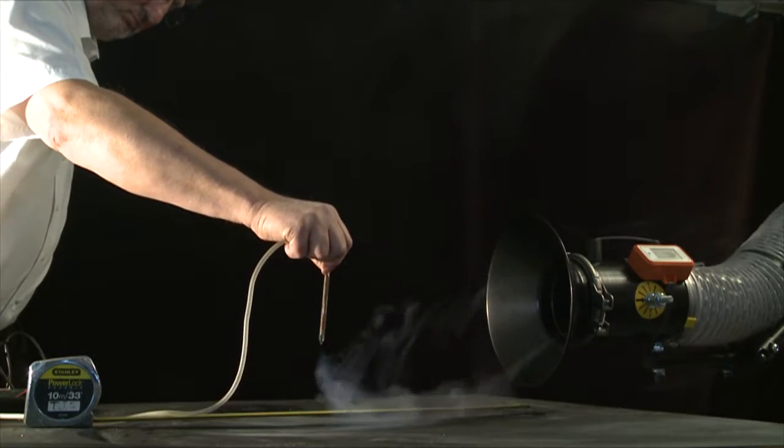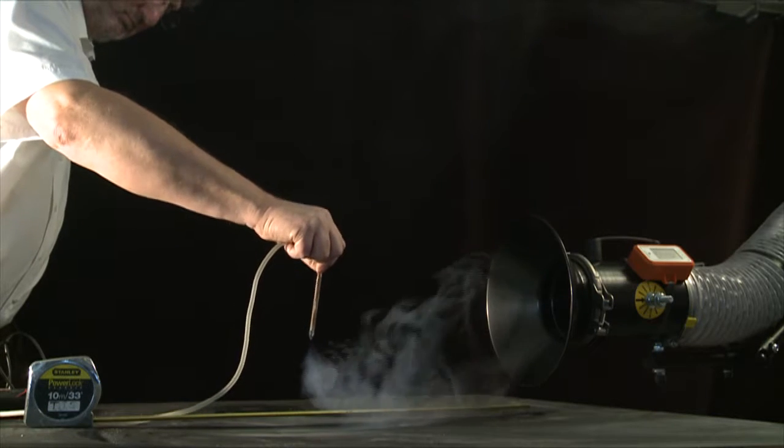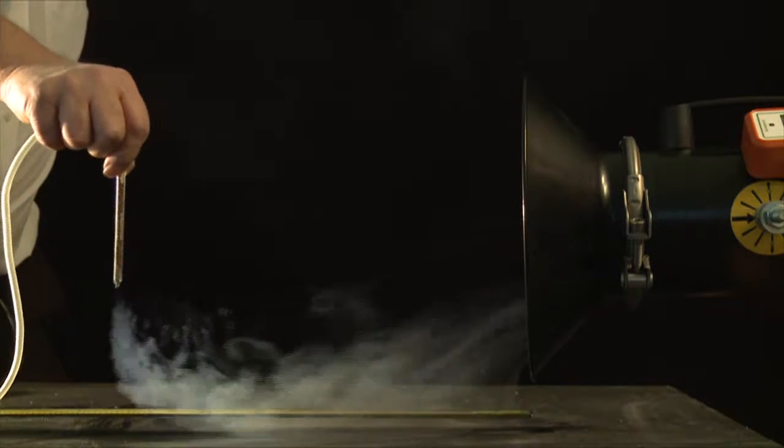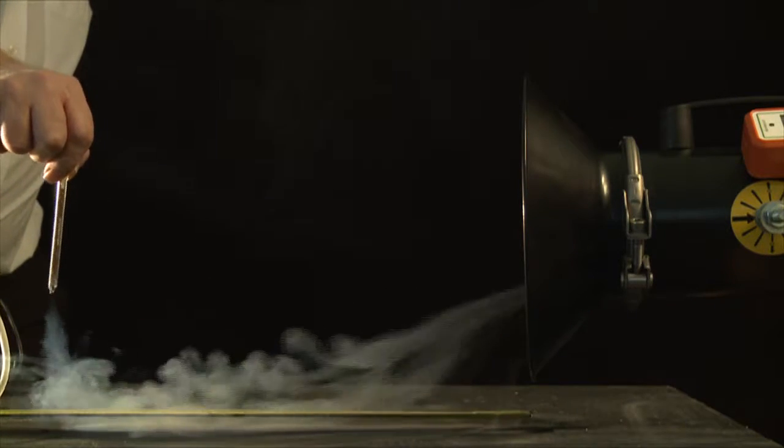Begin by moving the smoke source around the hood inlet, gradually moving further away from the opening until the full extent of the capture zone can be observed.